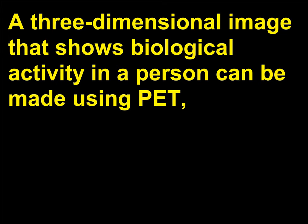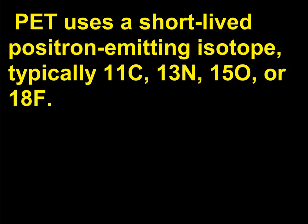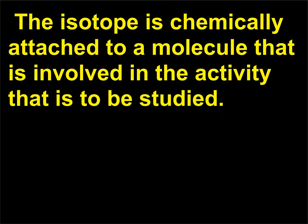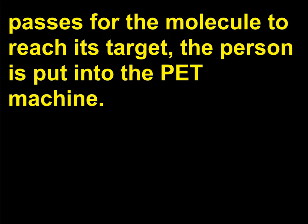A three-dimensional image that shows biological activity in a person can be made using PET, or positron emission tomography. PET uses a short-lived positron-emitting isotope, typically ¹¹C, ¹³N, ¹⁵O, or ¹⁸F. The isotope is chemically attached to a molecule involved in the activity to be studied. Fluid containing that molecule is injected into the person and after enough time passes for the molecule to reach its target, the person is put into the PET machine.